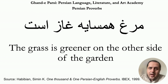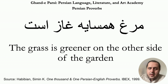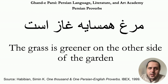So مرغ همسایه would be a compound — a possessive compound. The hen of the neighbor, or the neighbor's hen, is goose. The neighbor's hen is goose, which is equivalent to the English 'The grass is greener on the other side of the garden.' مرغ همسایه قاز است. Thank you for your attention and let's discuss the second proverb.